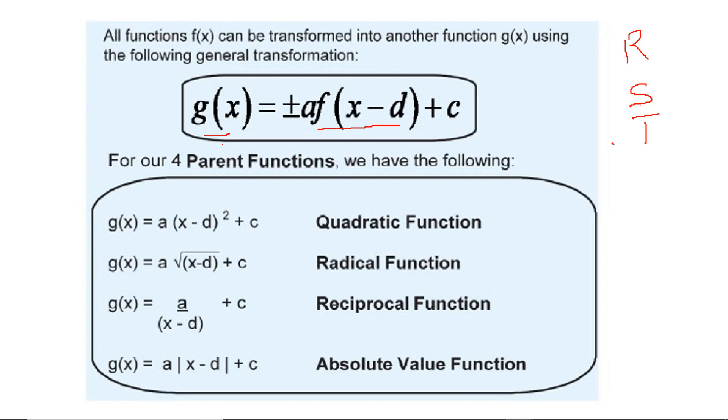g(x) is the transformed function where f(x) is placed inside, and we have parameters a, k, d, and c. These are the factors or values that correspond to the reflection, scaling, and translation.